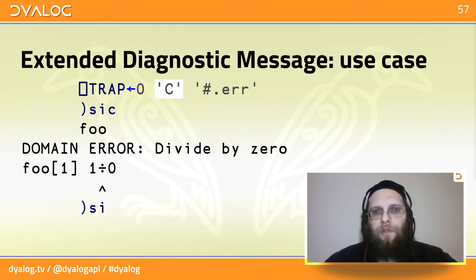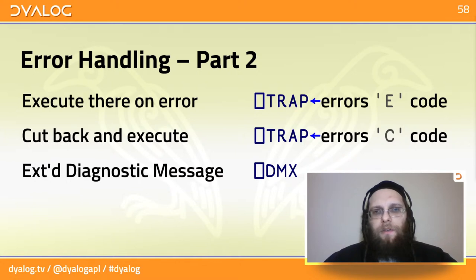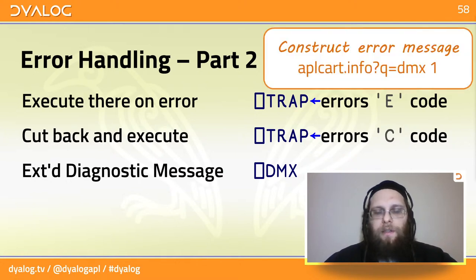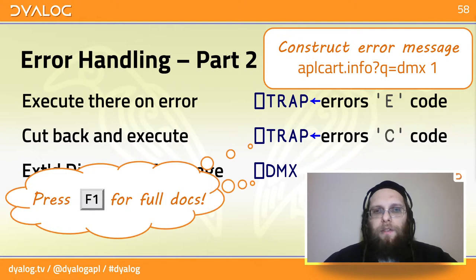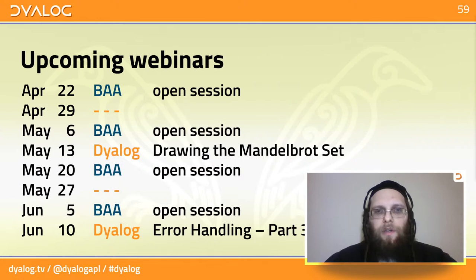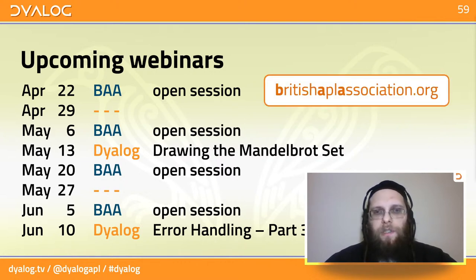And that's what I wanted to go through today. Here's an overview of it. You can find out how to construct the error messages on AppleCard. If you have any questions, feel free to ask in chat right now. But remember that you can always get the full information about things like QuadTRAP and QuadDMX by simply typing them into your APL session and pressing F1. While I'm waiting to hear if there are any questions, here is an overview of upcoming webinars, both dialogues and those arranged by the British APL Association. You can see the details on their website.